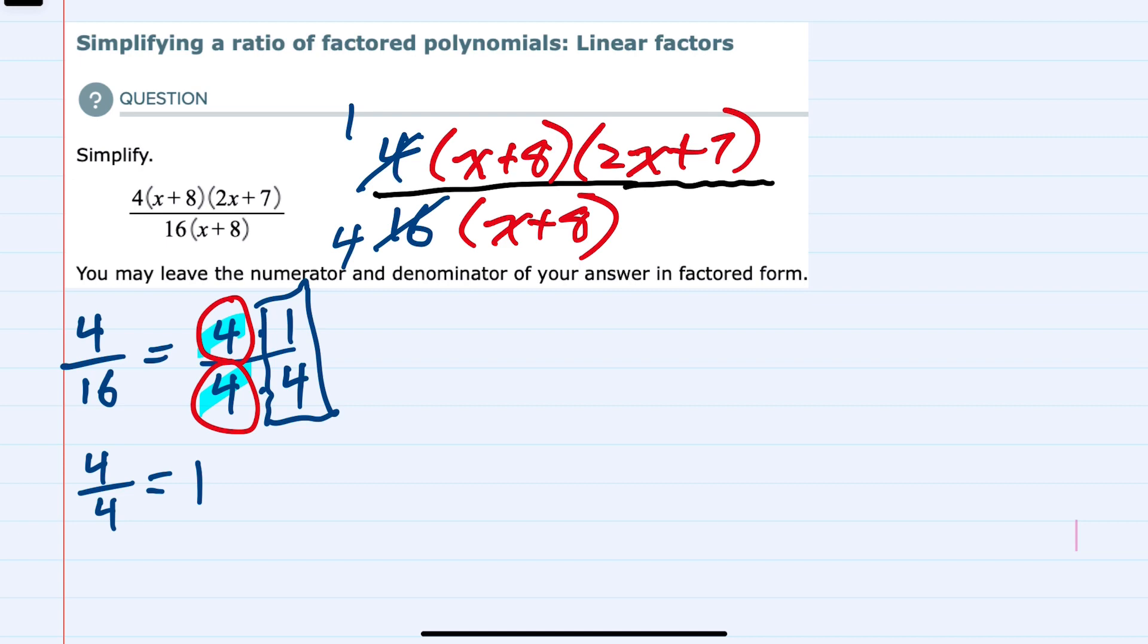because 4 divided by 4 is 1, x plus 8 divided by x plus 8 is also 1. So we can cancel those pieces. And we are left with, in the numerator,